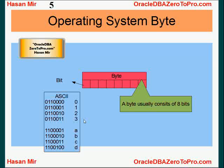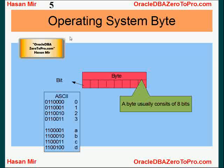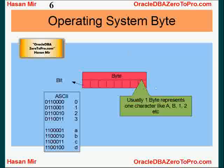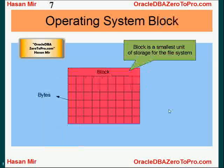One byte usually consists of eight bits, though it's not a hard and fast rule — two bytes could represent one character in some cases. The key concept is that one byte typically represents one character. We've been talking about the operating system level so far. Now let's talk about blocks.